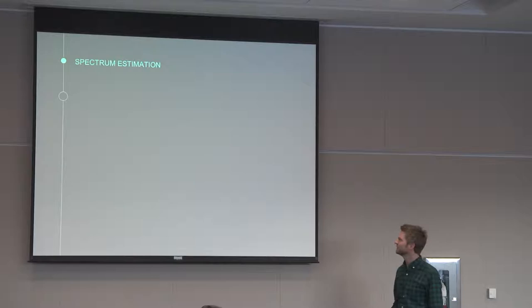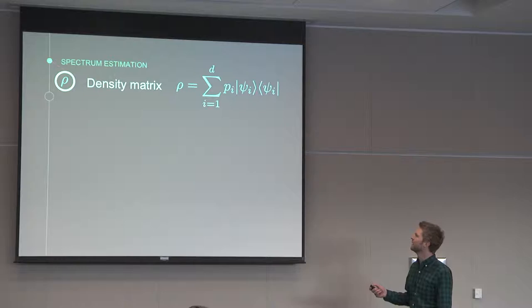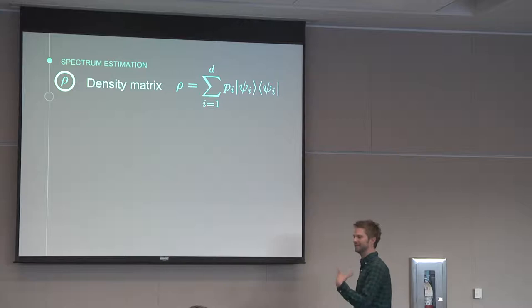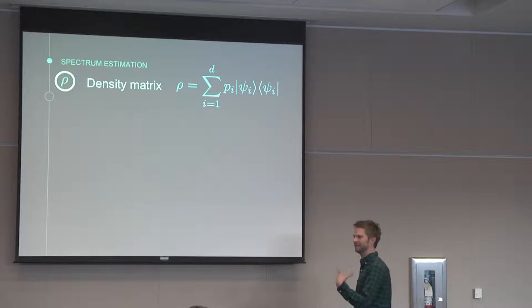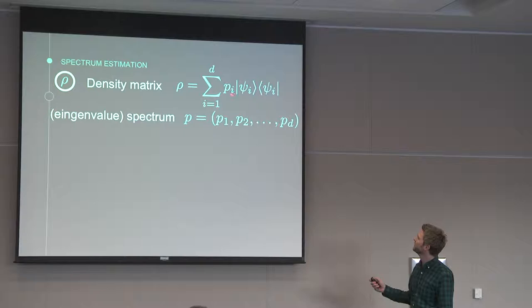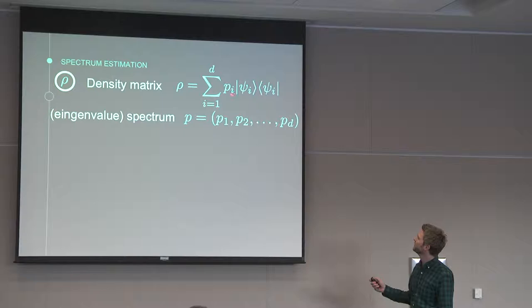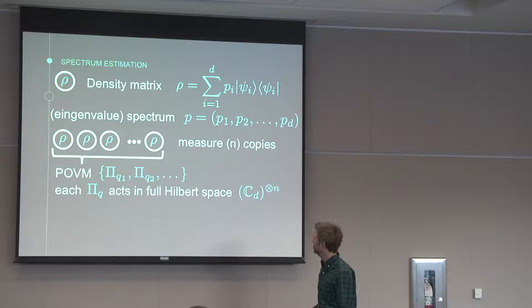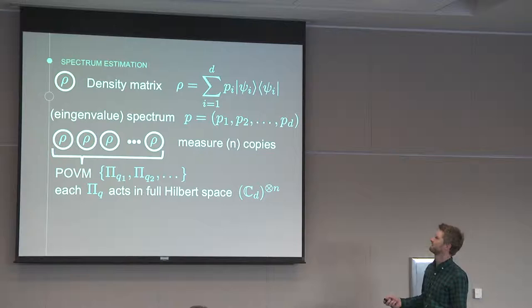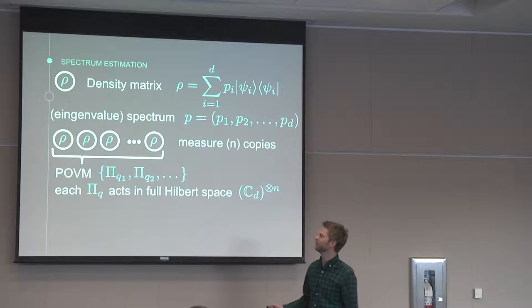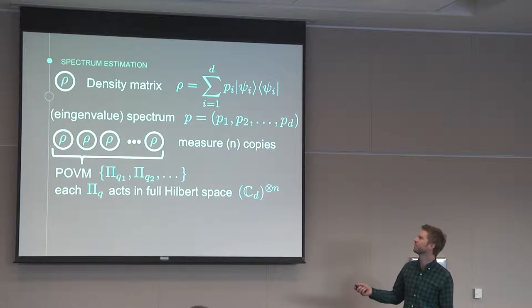I'll talk about the special purpose task of spectrum estimation now. The scenario is you're handed some unknown density matrix ρ. You are given many copies of this density matrix, and you would like to know the eigenspectrum - these values of p when you diagonalize the density matrix. That is the problem: learn the spectrum. In order to do this, you should receive many copies, say n copies of the state, and be allowed to perform measurements.